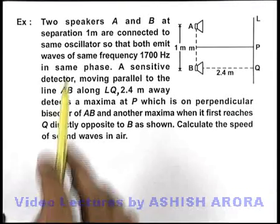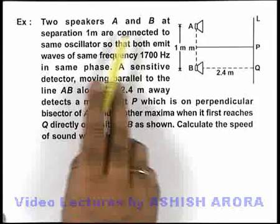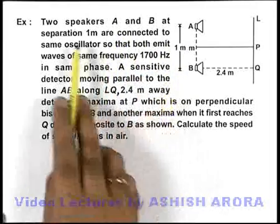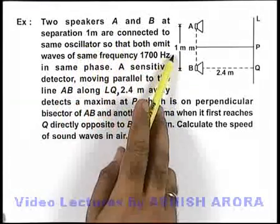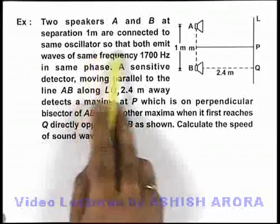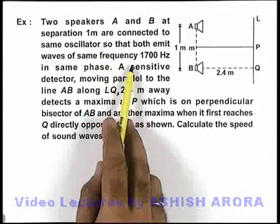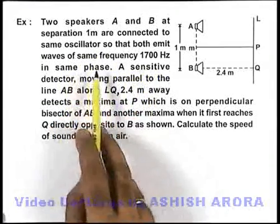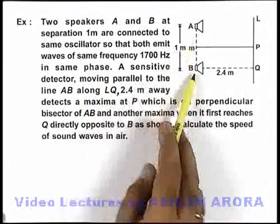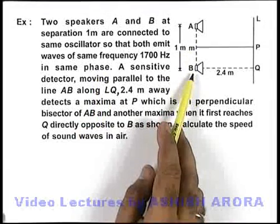In this example we are given that there are 2 speakers, A and B, at a separation 1 meter are connected to the same oscillator so that both emit waves of same frequency, 1700 hertz in same phase. That means the 2 speakers are emitting coherent waves.